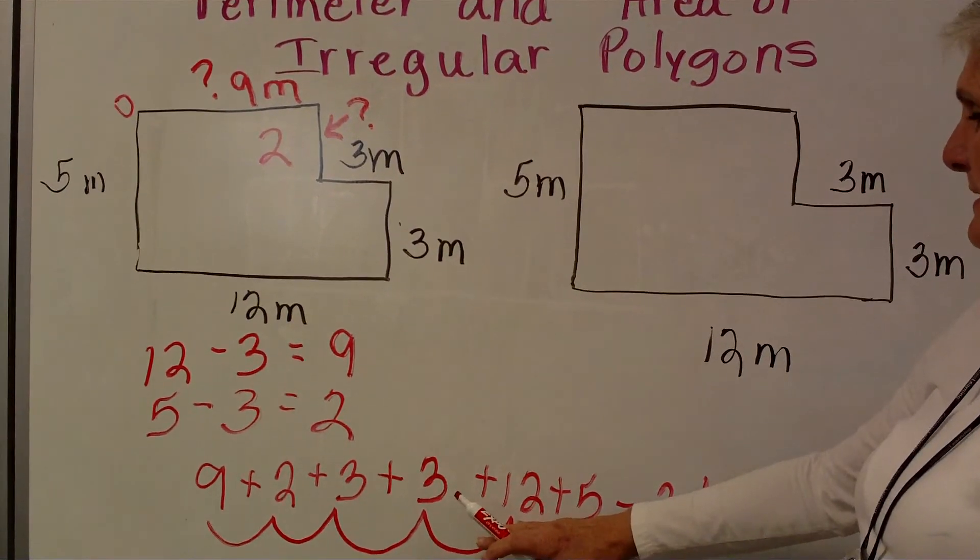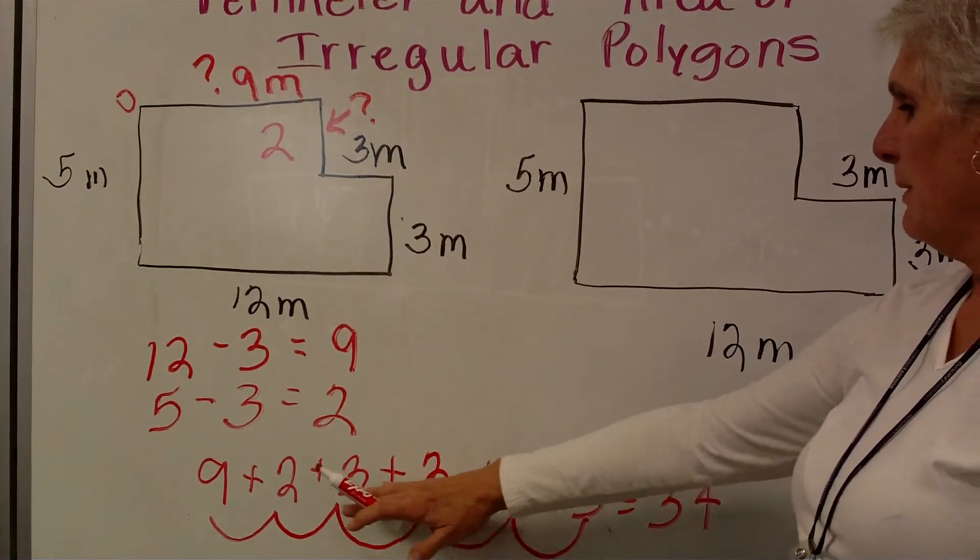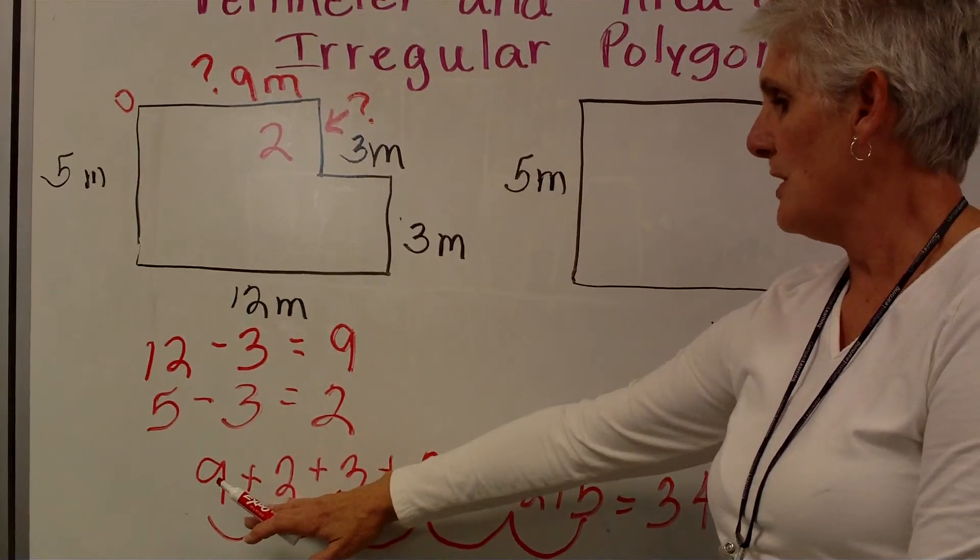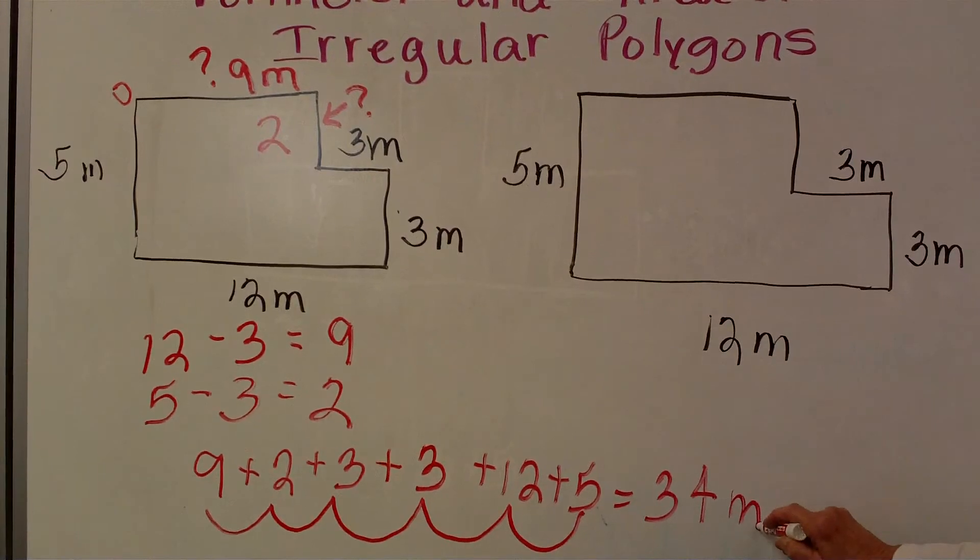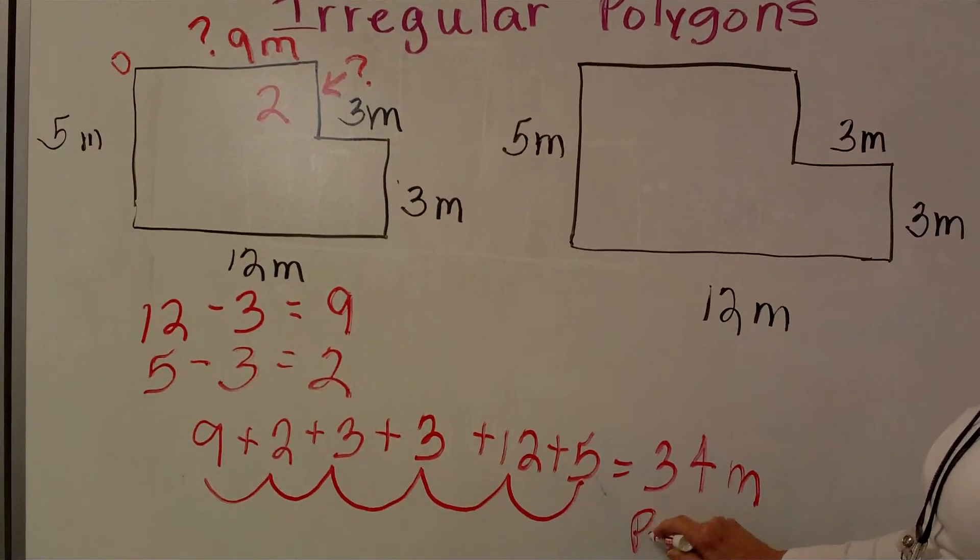Let's go the other way and make sure we get the same answer. 5 plus 12 is 17. 17 plus 3 is 20. 20 plus 3 is 23. 23 plus 2 is 25. 25 plus 9 is 34. My measurement is 34 meters and that is my perimeter.